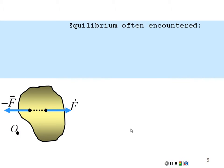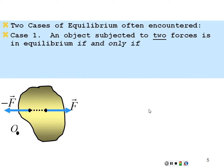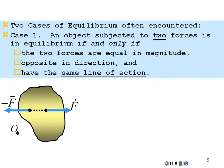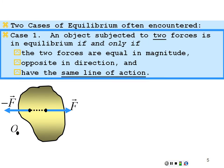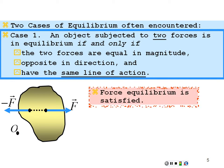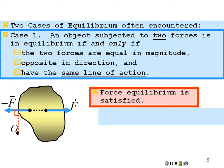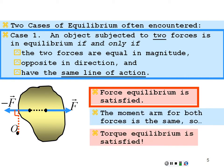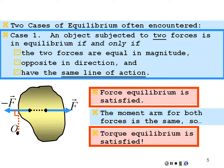That brings up one of our cases for equilibrium. An object subjected to two forces is in equilibrium if and only if the two forces are equal in magnitude, opposite in direction — giving net force zero — and they have the same line of action. Hence they have the same moment arm, and torque equilibrium is satisfied because one torque in one direction equals the same magnitude torque in the other direction. Both conditions of equilibrium are satisfied, making it a truly static situation.